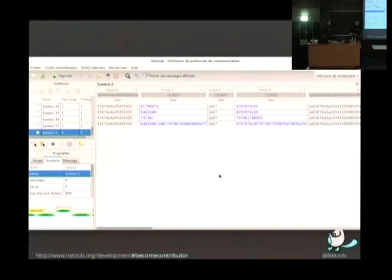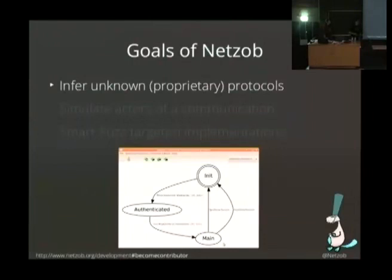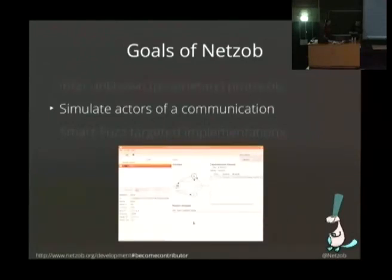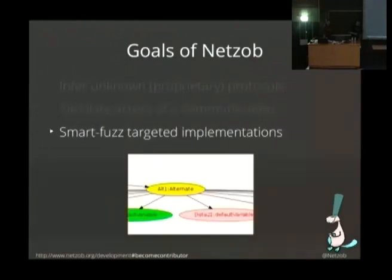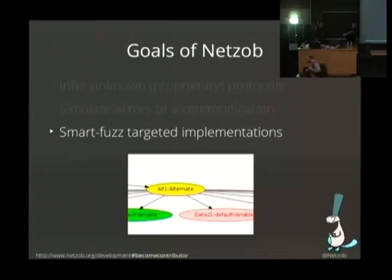The algorithms align the messages in order to understand their semantic and some unknown attributes of the protocols. There are three main goals for Netzob: the first one is to infer an unknown or proprietary protocol. It also allows you to simulate the protocols once you've reversed them, and finally it allows you to include mutations into your simulations to do fuzzing for security reasons or anything else you would like to do.